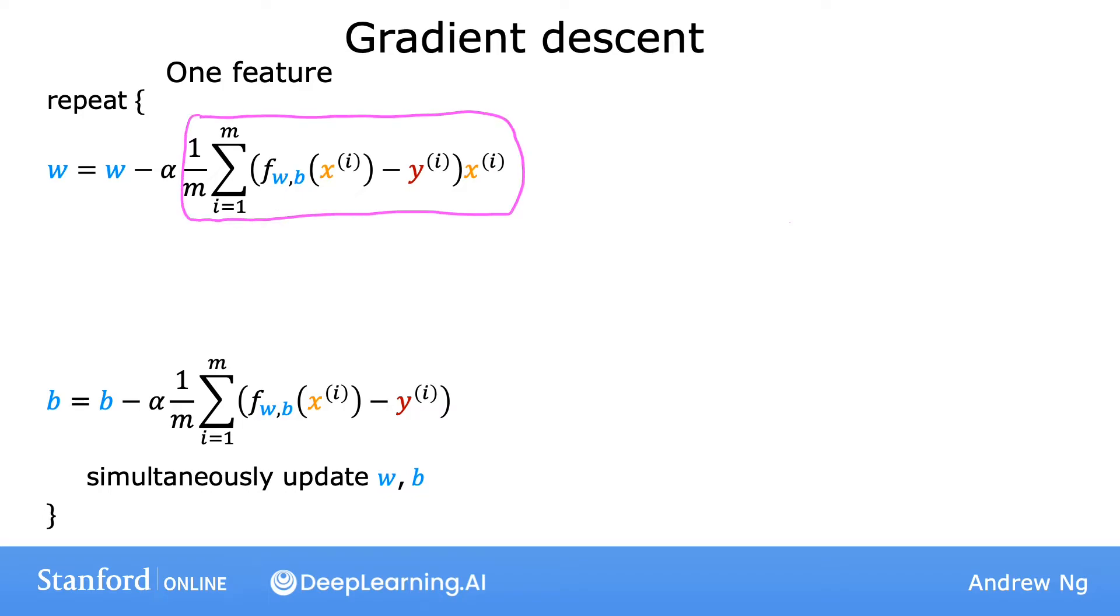And this term here is the derivative of the cost function J with respect to the parameter w. And similarly, we have an update rule for parameter b. With univariate regression, we had only one feature. We call that feature xi without any subscript.